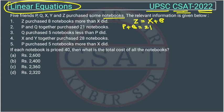Q purchased 5 notebooks less than P did. So Q purchased 5 notebooks less than P did. So the equation will become P minus Q equals 5. And here we have P plus Q equals 21.